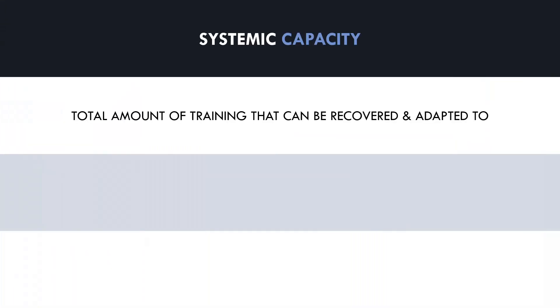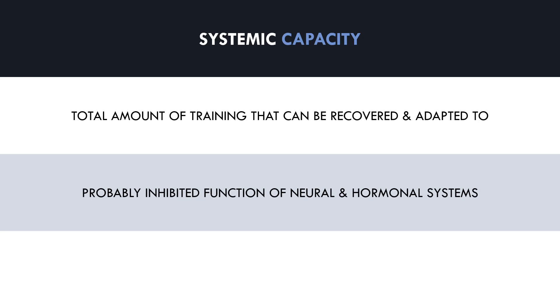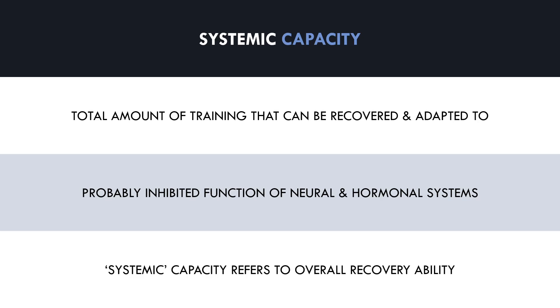First, let's explore what systemic recovery capacity is. Systemic recovery refers to the total amount of training that we can recover and adapt to. We often hear strength athletes talk about strength reductions due to CNS fatigue, but it is difficult to specifically pinpoint the central nervous system. Rather, it is probably some combination of inhibited function from the nervous system and hormonal system. We don't know exactly what systems are impacted, but we do know that doing too much hard training certainly impacts performance. Therefore, we simply use the term systemic capacity as a general meaning for the total amount of training that can be handled by the entire organism.